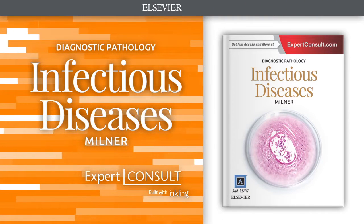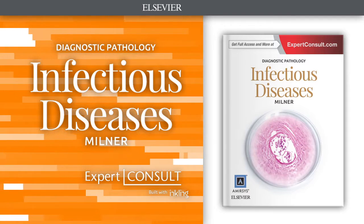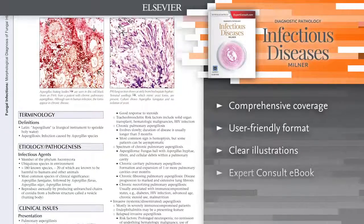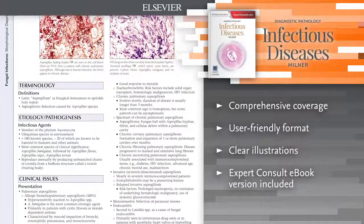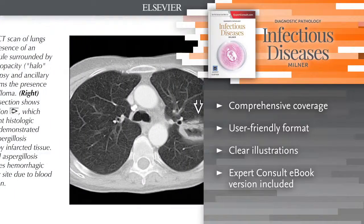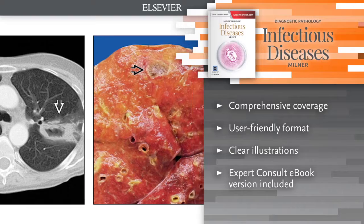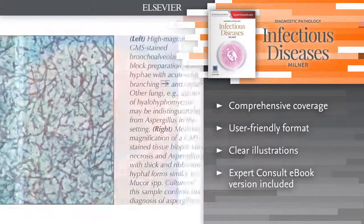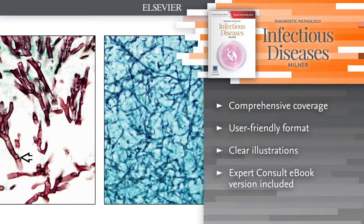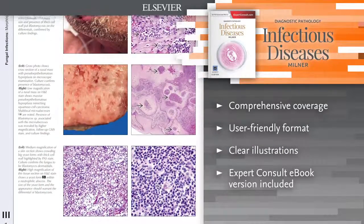Introducing Diagnostic Pathology Infectious Diseases. This new title takes a comprehensive look at infectious diseases, their anatomic manifestations, and how to ensure a complete and accurate sign-out at the microscope. A user-friendly chapter landscape and thousands of high-quality images combine to make this reference a key companion for the general surgical pathologist or resident-in-training.